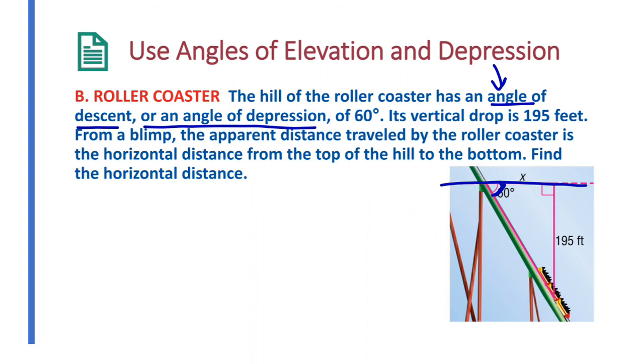Its vertical drop, so straight down vertically is 195 feet. From a blimp, the apparent distance traveled by the roller coaster is the horizontal distance from the top of the hill to the bottom. Find the horizontal distance. So we're trying to find this x here, the horizontal distance from here to here,